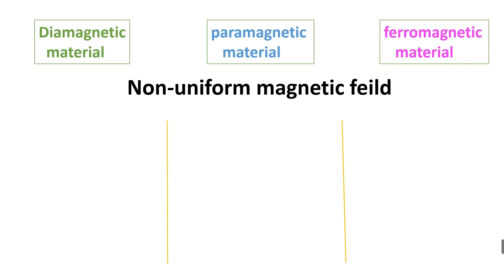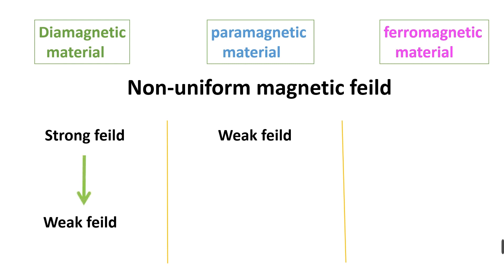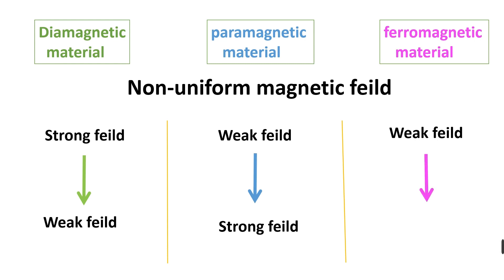Diamagnetic material in a non-uniform magnetic field travels from the strong field region to the weak field region. While paramagnetic material travels from the weak field region to the strong field region. And ferromagnetic material also goes from the weak field region to the strong field region.